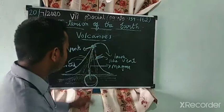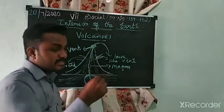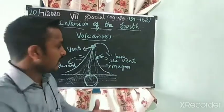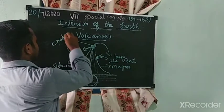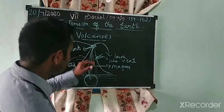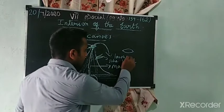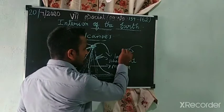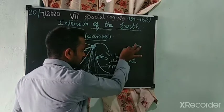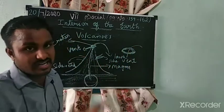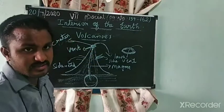When the magma and ashes come outside the earth through the vent, the vent changes shape — it becomes a funnel shape. This funnel shape is called a crater. The vent is just the open place, but when magma comes to the surface, some ashes and minerals occupy this vent, so the shape changes to a funnel. This funnel shape is called a crater.